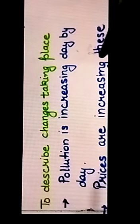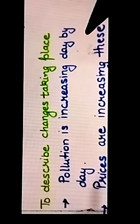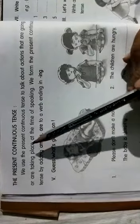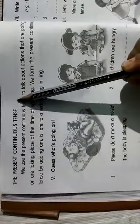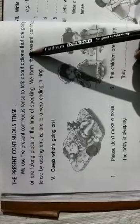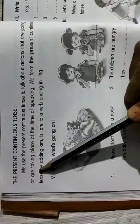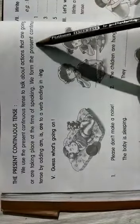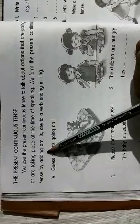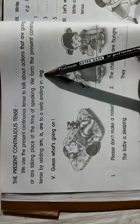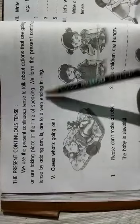Now you can understand the present continuous tense well. And now come to the book work. Now see the book. The present continuous tense. We use the present continuous tense to talk about actions that are going on or are taking place at the time of speaking. We form the present continuous tense by adding am, is, are to a verb ending in ing. Now you have learnt it very well.